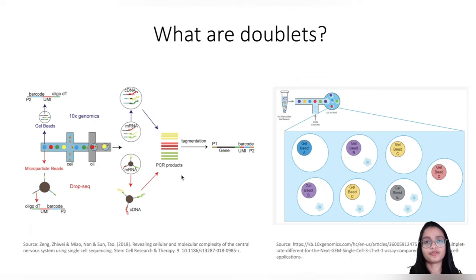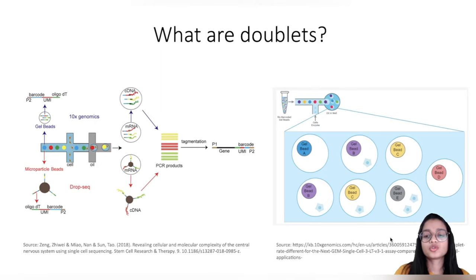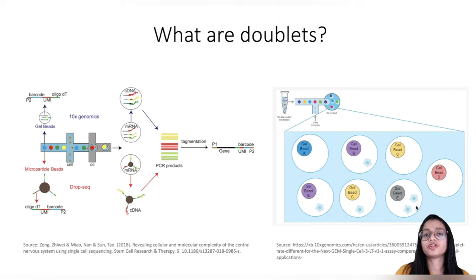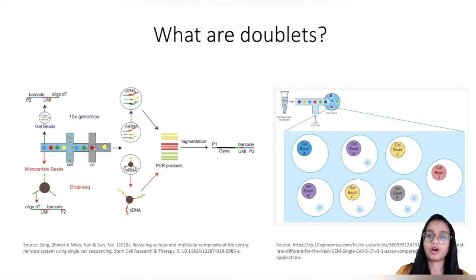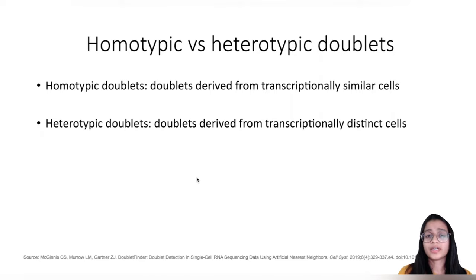This hybridized mRNA is amplified using PCR and that's how we get gene quantifications for each cell. But sometimes multiple cells are encapsulated in a droplet with a gel bead — this is what we refer to as doublets. These are considered technical artifacts which need to be filtered out, as having them in the data can lead to false inferences.